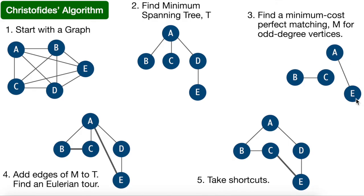We add edges to create a minimum cost perfect matching between the four odd-degree vertices — picking the two cheapest edges that connect pairs of these vertices. We connected B–C and A–E, adding these two edges to the minimum spanning tree. Next we find a Eulerian tour: starting at A, the tour visits every edge — going A to B to C back to A to E to D to A — visiting every edge and every vertex in the tree.